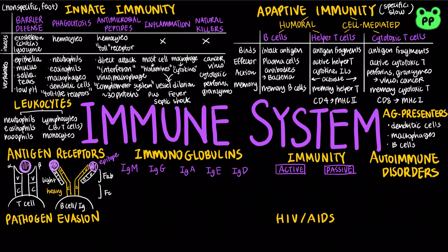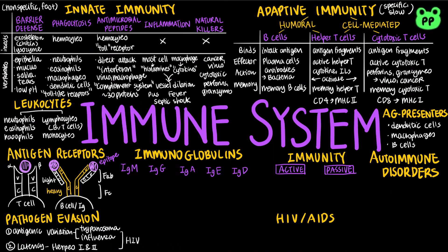There are two mechanisms by which pathogens escape our immune system. Antigenic variation involves changes in epitope expression so that lymphocytes no longer recognize particular pathogens. Both Trypanosoma, which causes sleeping sickness, and influenza use antigenic variation to evade our immune system. Latency refers to a virus in a dormant state, found in type 1 and type 2 herpes simplex virus. HIV uses both antigenic variation and virus latency to evade our immune system.